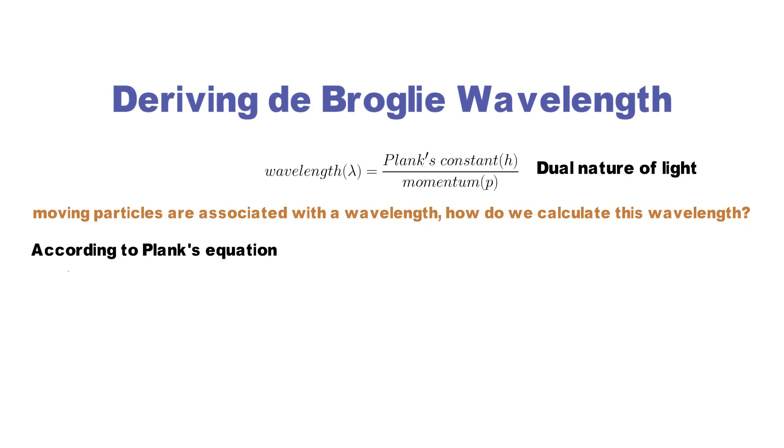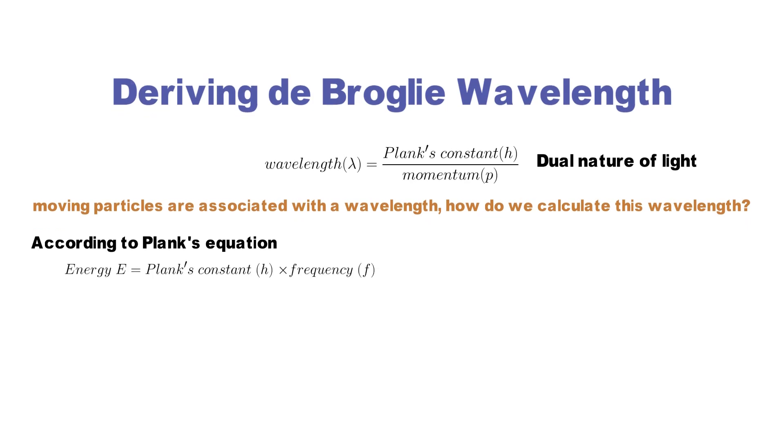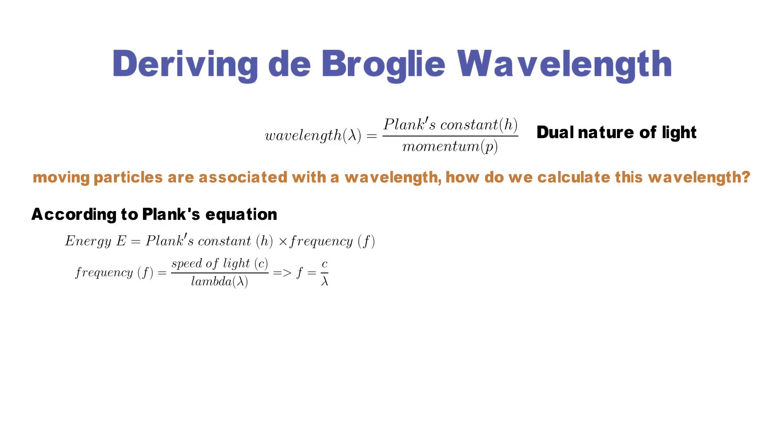Planck's equation relates the energy of a photon to its frequency f, where h is Planck's constant. By substituting frequency f as c divided by lambda, we relate energy to wavelength. So the energy is equal to Planck's constant times speed of light divided by wavelength.